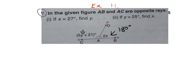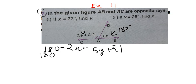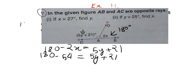See how, 180 minus 2x is equal to 5y plus 21. Now, we know that x is 27, so 180 minus 2 into 27 and that is 54 is equal to 5y plus 21. So, 180 minus 54 will be 126 here.